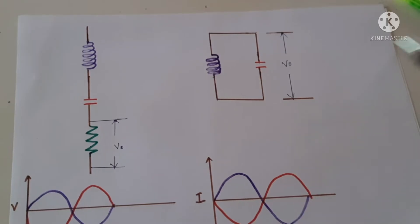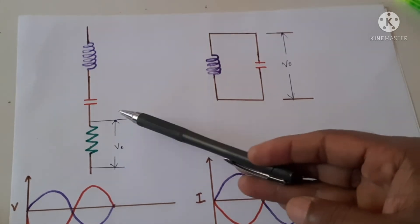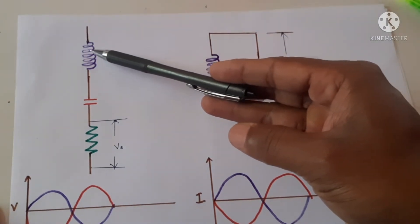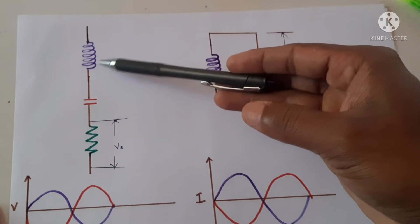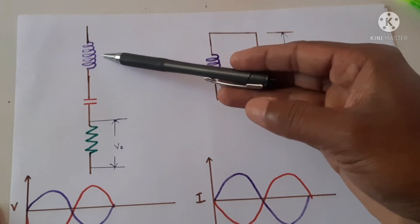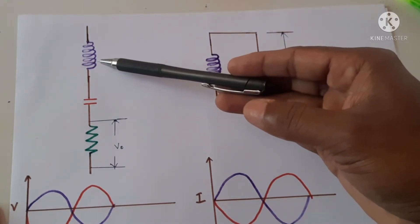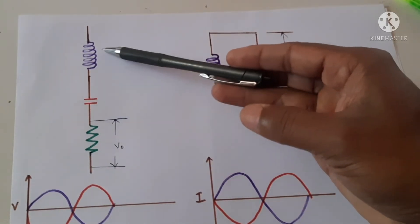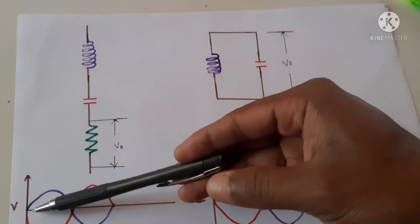There are two LC circuits: a series LC circuit and a parallel LC circuit. If a frequency is induced in this coil and if this frequency is equal to the resonating frequency, at which the reactance of the inductor equals the reactance of the capacitor, it is called the resonance frequency. At that frequency, the voltage across the capacitor is equal to the voltage across the inductor, as shown here.